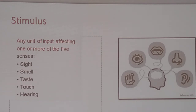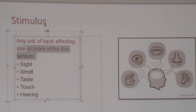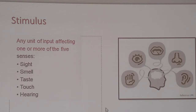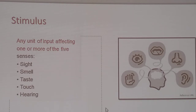Stimulus is any unit of input affecting one or more of the five senses — highlight that word stimulus and the word senses. A commercial you see on TV, that's sight and sound. When you walk into a bakery, the first thing that hits you is the smell of the baked goods. Or when you go to a store and they give you samples, that affects your taste. Or they let you hold and touch something. So all five senses affect our decision making. Our biggest ones are sight and hearing, because that's where advertisement comes in — through magazines, television, or radio. Sometimes they put samples of cologne in a magazine and you get the smell.